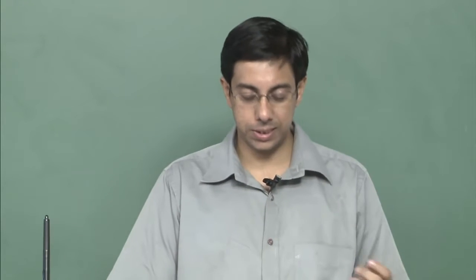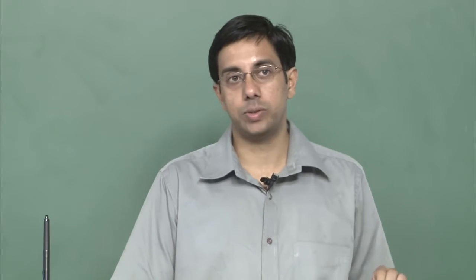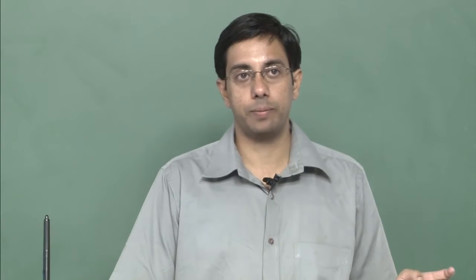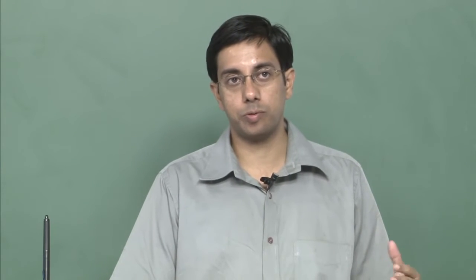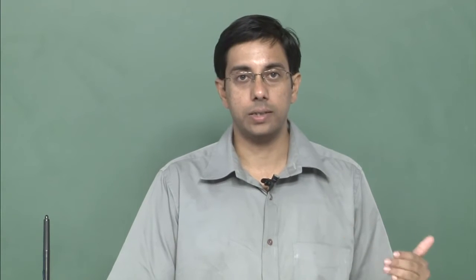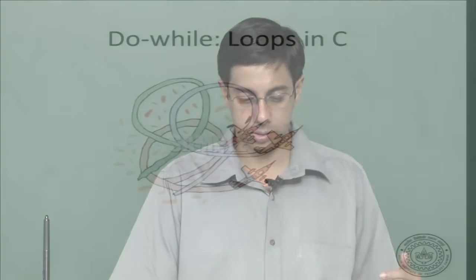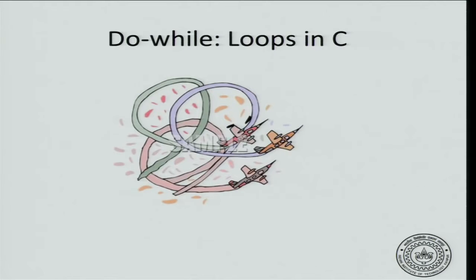So far we have been using while loops in C. The C programming language also provides other kinds of loops. Let us look at some of them. The first alternative loop mechanism in C that we will look at is known as a do-while loop.